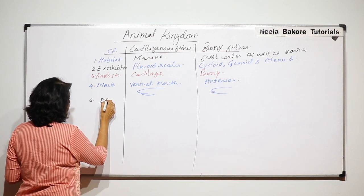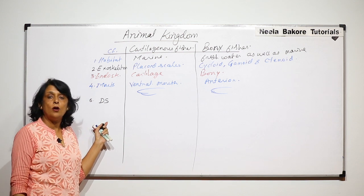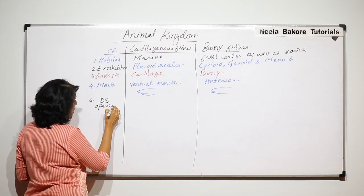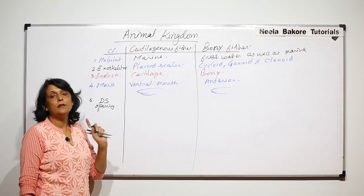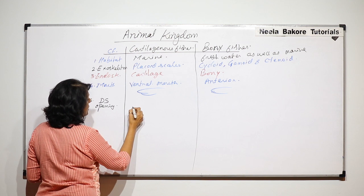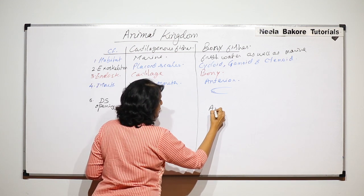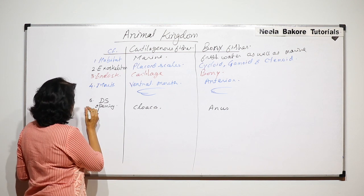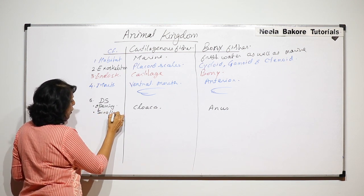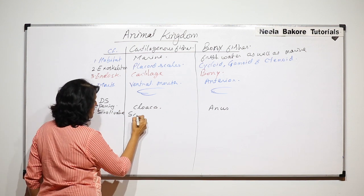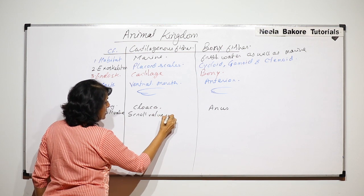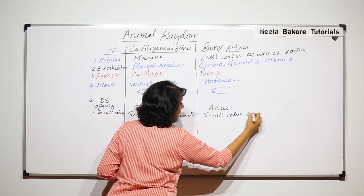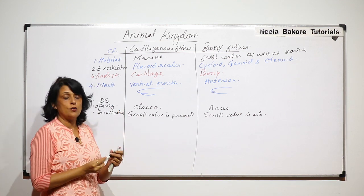Now let us compare the digestive system on two points. First, the opening of the gastrointestinal tract: cartilaginous fishes have a cloaca, which is a common opening for three systems including the digestive system, whereas bony fishes have a separate anus. Second, the spiral valve: in cartilaginous fishes the spiral valve is present, whereas in bony fishes it is absent.